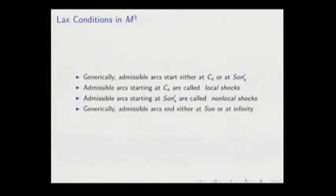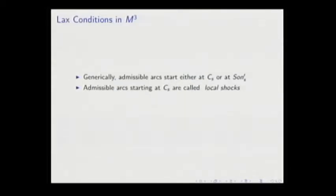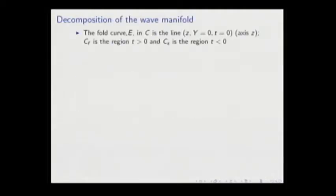Admissible arcs generically end either at sonic or at infinity, because on the sonic surface this inequality reverts. The fold curve E, using these coordinates, is the axis E. The fast characteristic is the region T greater than zero, and the slow characteristic is T less than zero.